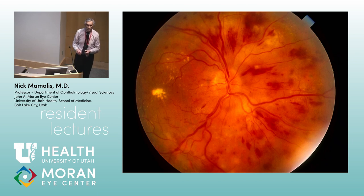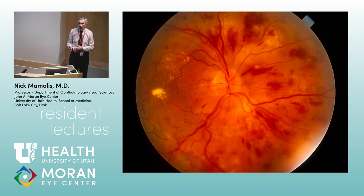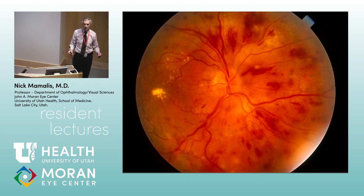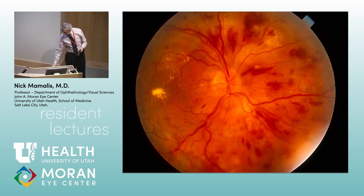This was actually a younger patient who came in and was triaged — initially thought to be a central retinal vein occlusion. A student asked whether anyone had checked the blood pressure. When they checked, it was 200 over 100, and the patient went off to the ER. This is severe hypertensive retinopathy.